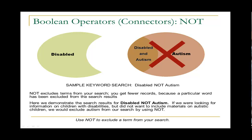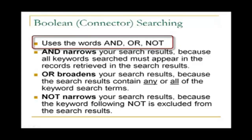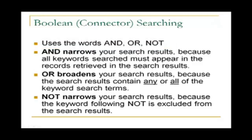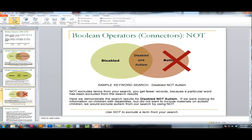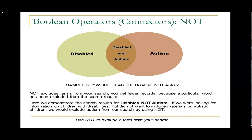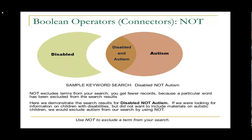Let's review. Boolean or connector searching uses the words AND, OR, and NOT. AND narrows your search results because all keywords searched must appear in the records retrieved. OR broadens your search results because all the search results contain any or all of the keyword search terms. NOT narrows your search results because the keyword following NOT is excluded from the search results. If you need assistance with your searching or any library resources, go to the library homepage and click on Ask a Librarian.